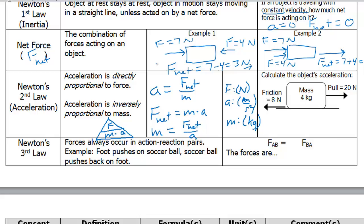Let's take a look at this example. Calculate the object's acceleration. 4 kilogram object pulled to the right with 20 newtons of force. Friction resisting to the left with 8 newtons of force. To calculate the object's acceleration, we're going to use acceleration equals net force divided by mass.